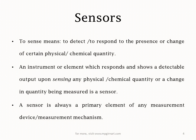Aisa instrument jo aisi cheez ko detect karta hai aur respond karta hai, aur woh response aisa hai jo detect ho sake — means an instrument or element which responds and shows a detectable output. Yeh cheez kaafi important hai: detectable output na ho to sensor kisi kaam ka nahi. So it is very important that the instrument or element used as a sensor must have a detectable output. Sensor is always a primary element of any measurement mechanism — jo cheez measure karni hai uske direct contact mein jo pehli cheez aati hai, usse bolte hain sensing element ya sensor.